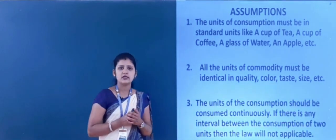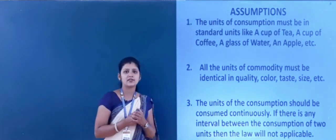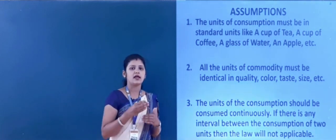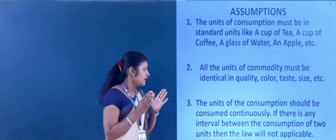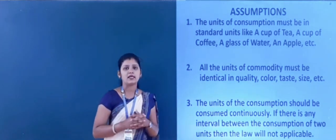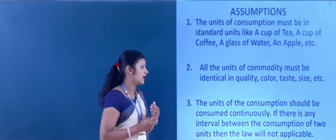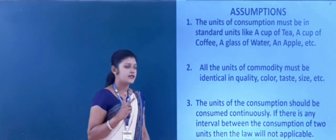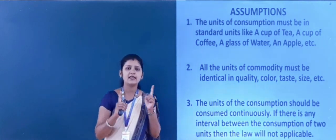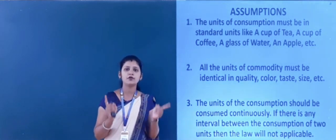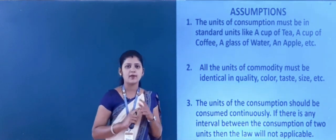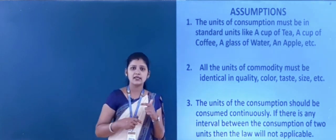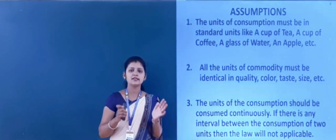The third assumption is: the units of consumption must be consumed continuously. Whatever units the consumer is going to consume, that must be continuous. If there is any interval between the consumption of two units, then the law is not applicable. If the consumption is continuous, then only the law of diminishing marginal utility is applicable.